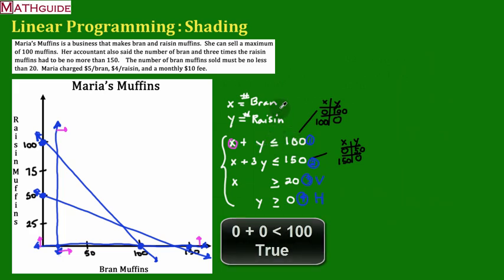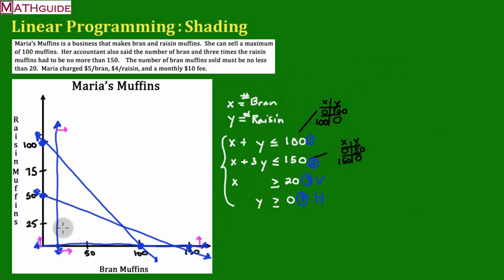zero is less than or equal to 100. So that means I'm going to shade where that point is. In other words, I'm going to shade everything below this diagonal line because a point below the diagonal line works. If I had chosen some point over here, it would not work inside this equation. So that's why I'm not shading over here.